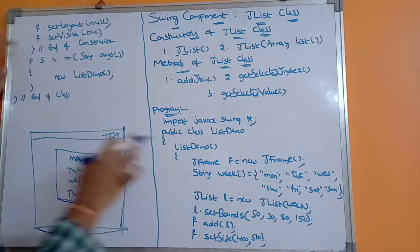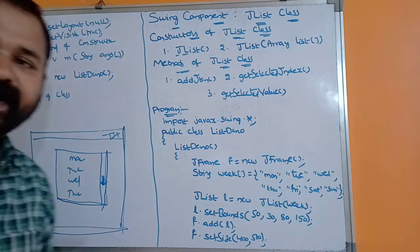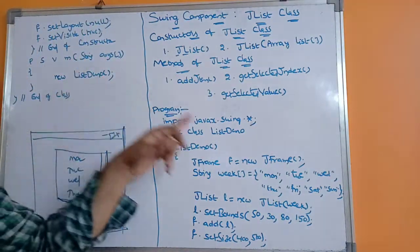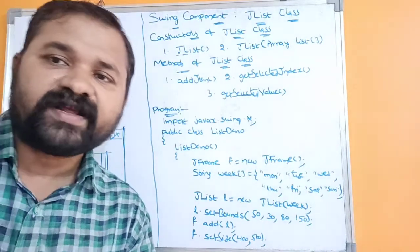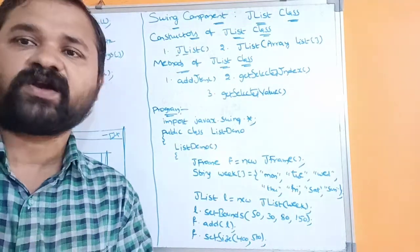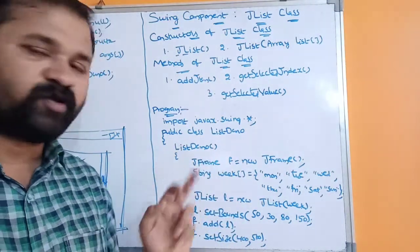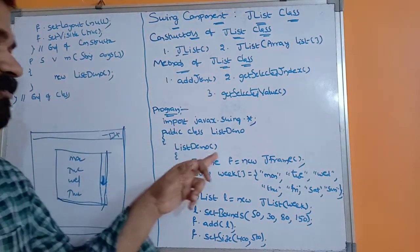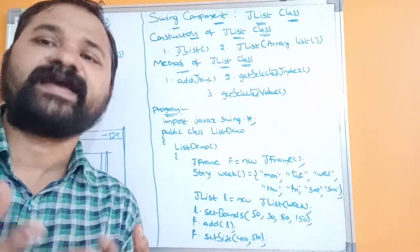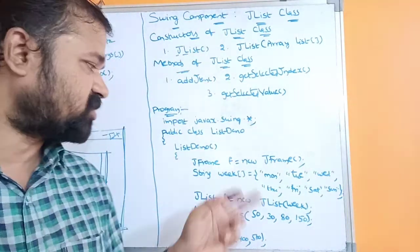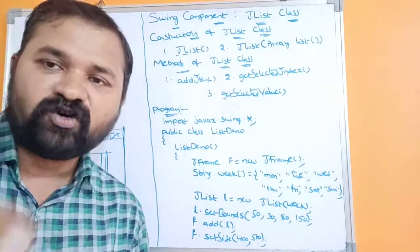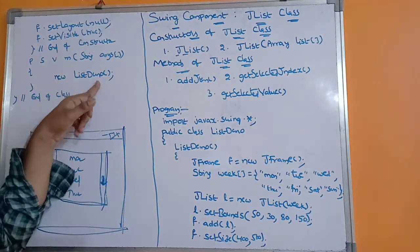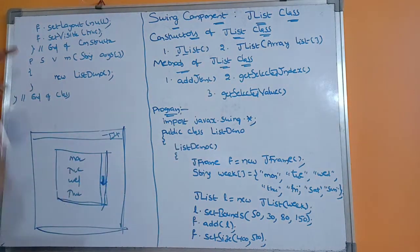Next is the end of the constructor. Then we have public static void main(String args[]) — execution of the program starts from the main method. Now we call the constructor by creating an object: new ListDemo(). We know it is not necessary to call the constructor explicitly; whenever an object is created, the corresponding constructor is automatically called. There is no need to create a reference variable like ListDemo obj = new ListDemo(). Whenever the object is created, all the statements in the constructor will be executed.